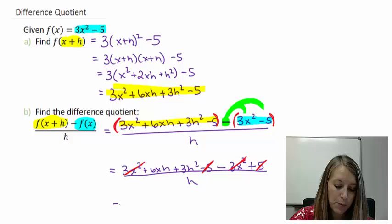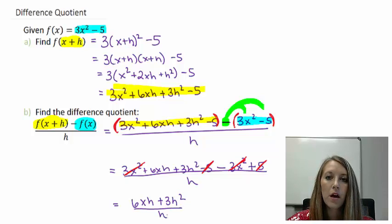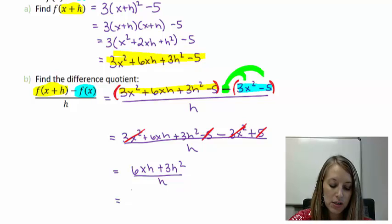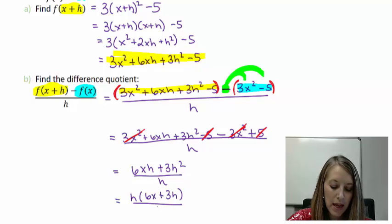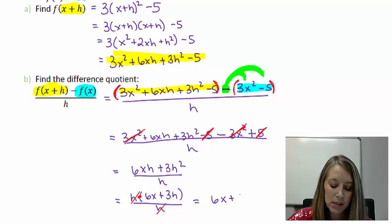So what I have left at this point is 6xh plus 3h squared all over h. That's what we have at this time for the difference quotient, but you need to ask yourself, can I simplify it any farther? And the answer is yes. All of our terms have h's involved, so we can factor an h out of the numerator. It gives me 6x plus 3h. And we can then cancel that h with the denominator. We can only cancel when things are in multiplied form. So my h divided by h cancels out, and so my difference quotient answer leaves me with 6x plus 3h.